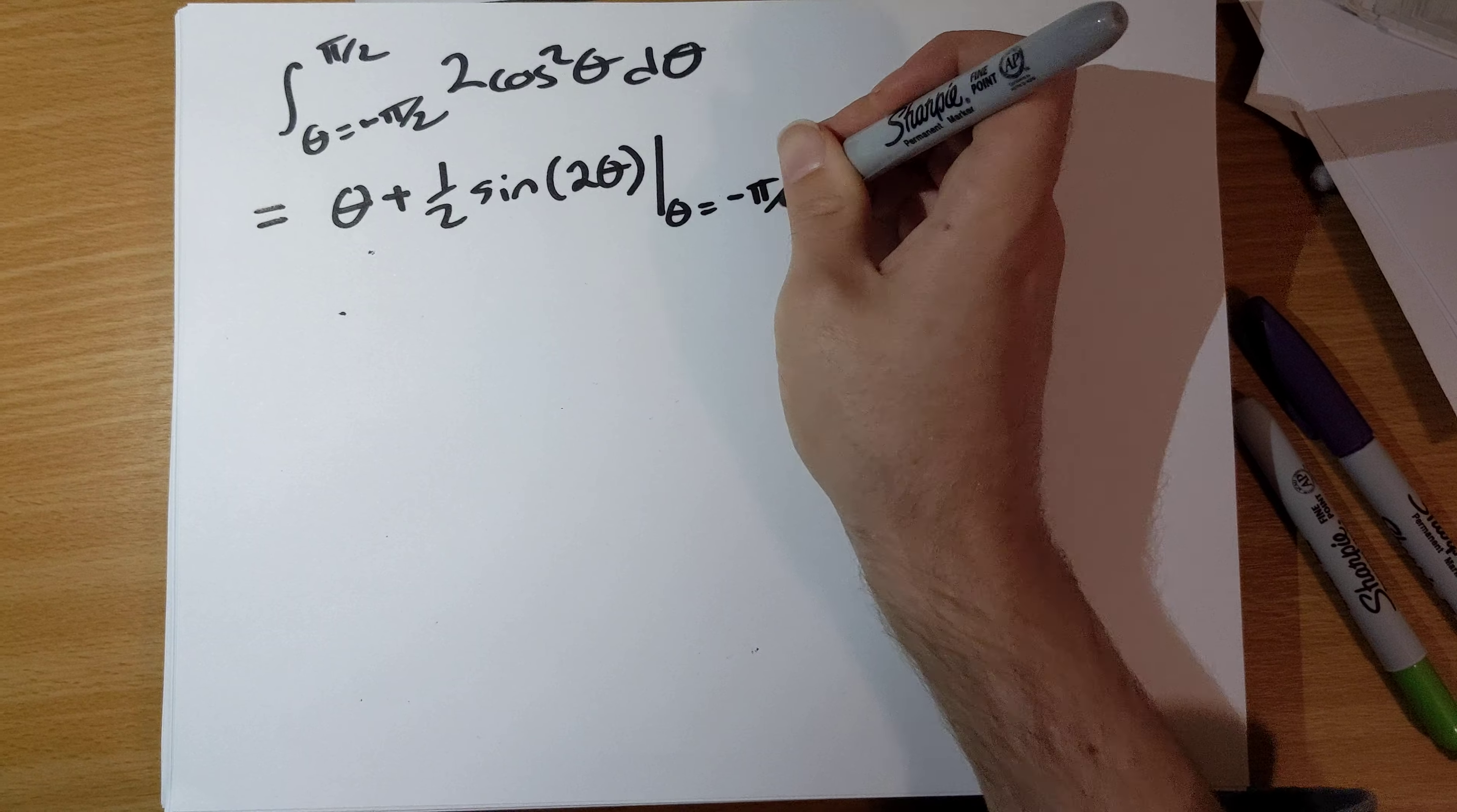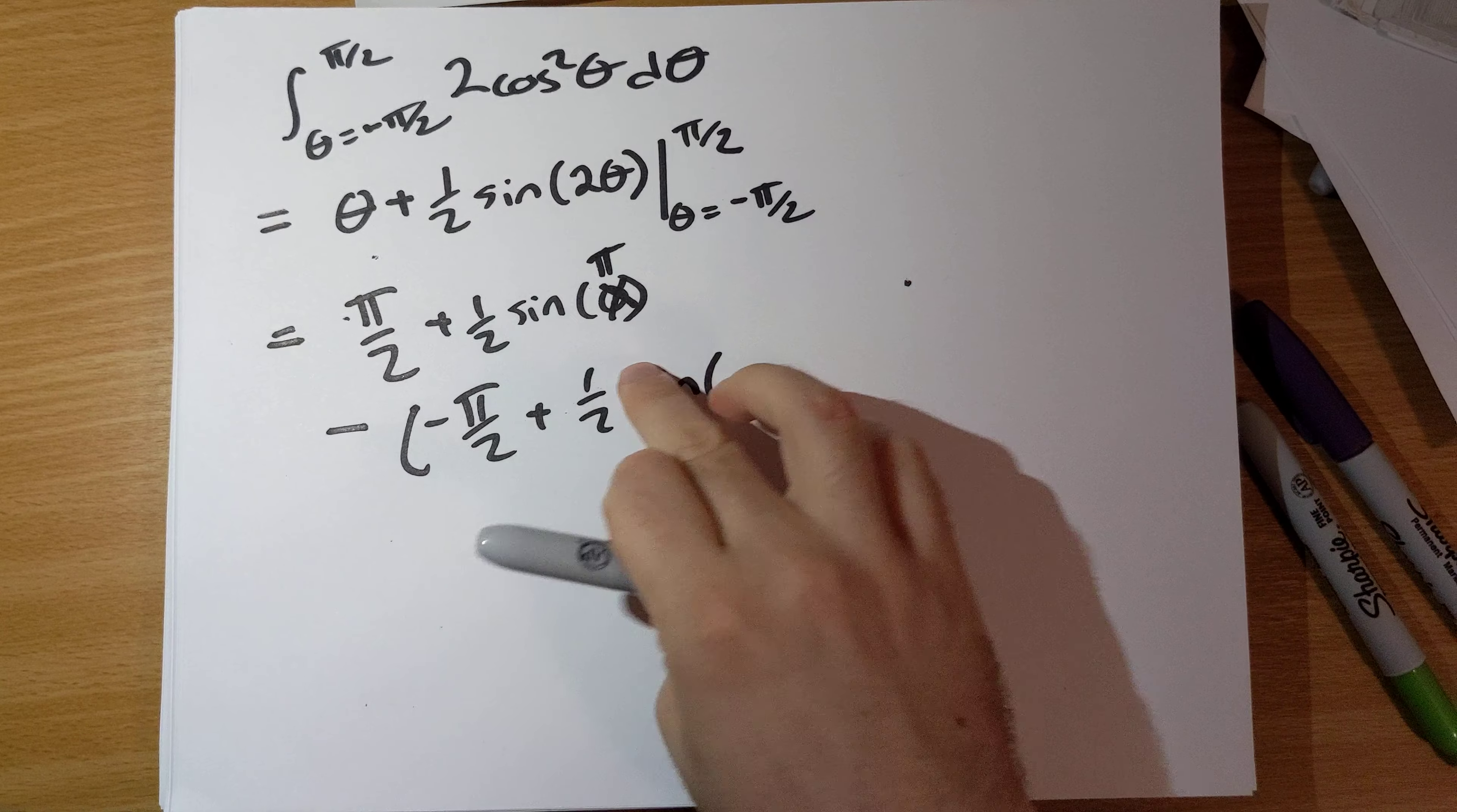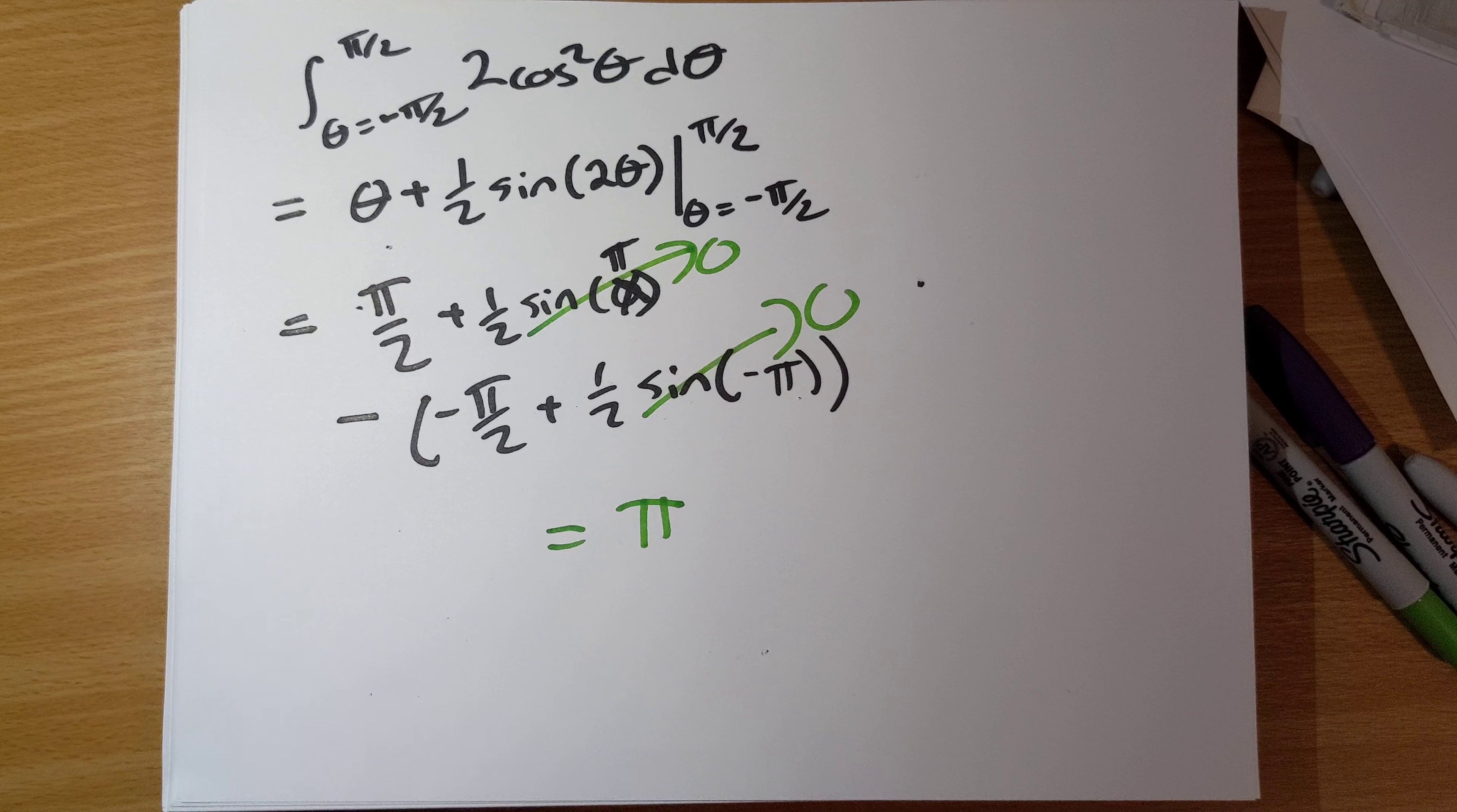So we end up with π/2 plus 1/2 times sine of 2 times π/2, which is sine of π, but that's going to be 0, minus negative π/2 plus 1/2 sine of 2 times negative π/2 is negative π, and so that is 0. That is 0. π/2 minus negative π/2 is π. And yes, that checks out here. This is a circle of radius 1. π times 1 squared is π.